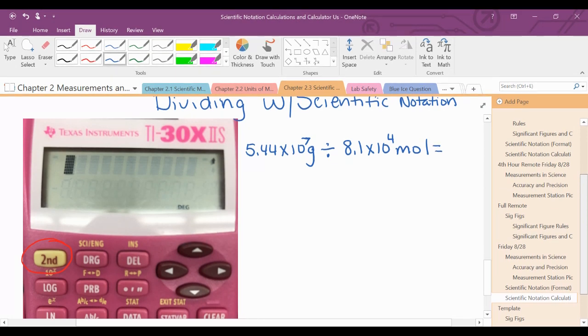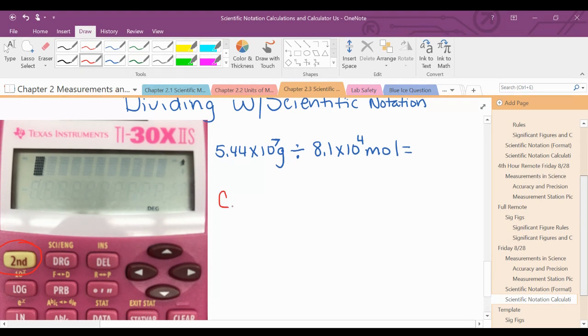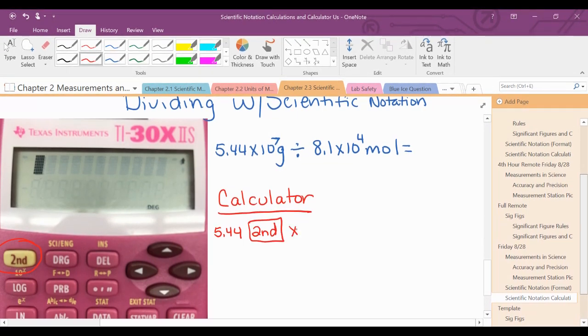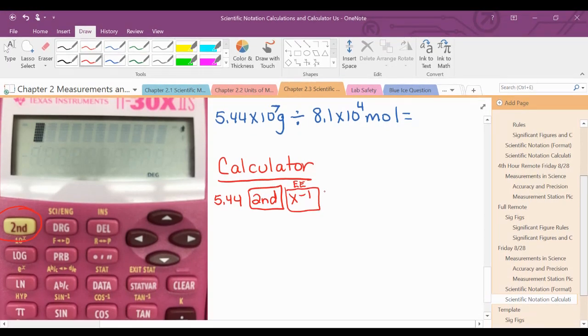So what we're going to do is I'm going to show you how you would type it out in your calculator. So in your calculator, you would type 5.44 second, that X to the negative 1, which is the EE button, 7,